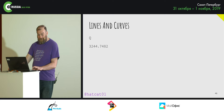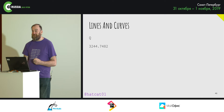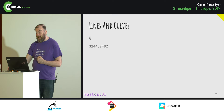We can't represent the number 3,244.7482 using the float type. Can anyone guess why? Precision — exactly. Floats are only precise to about 5 base-10 orders of magnitude. And this will become a significant problem later on — cellos and trombones again.